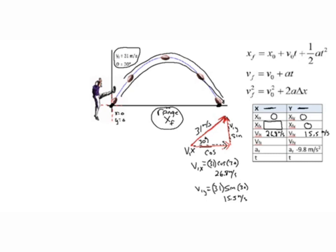If you're not sure what the final y position is, imagine you're standing in the position of the football player and watching from that dimension. The football just goes up and comes back down, starting and ending at the same position. So we know that the final y position is zero.